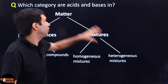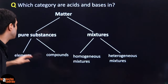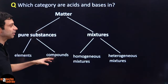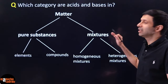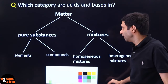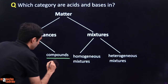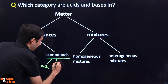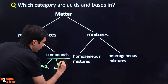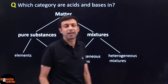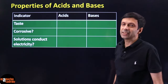Which category do acids and bases come under? Matter can be divided into pure substances and mixtures. Pure substances can be divided into elements and compounds; mixtures into homogeneous or heterogeneous. Acids, bases, and salts all come under the category of compounds. They are not elements — they are made from elements.